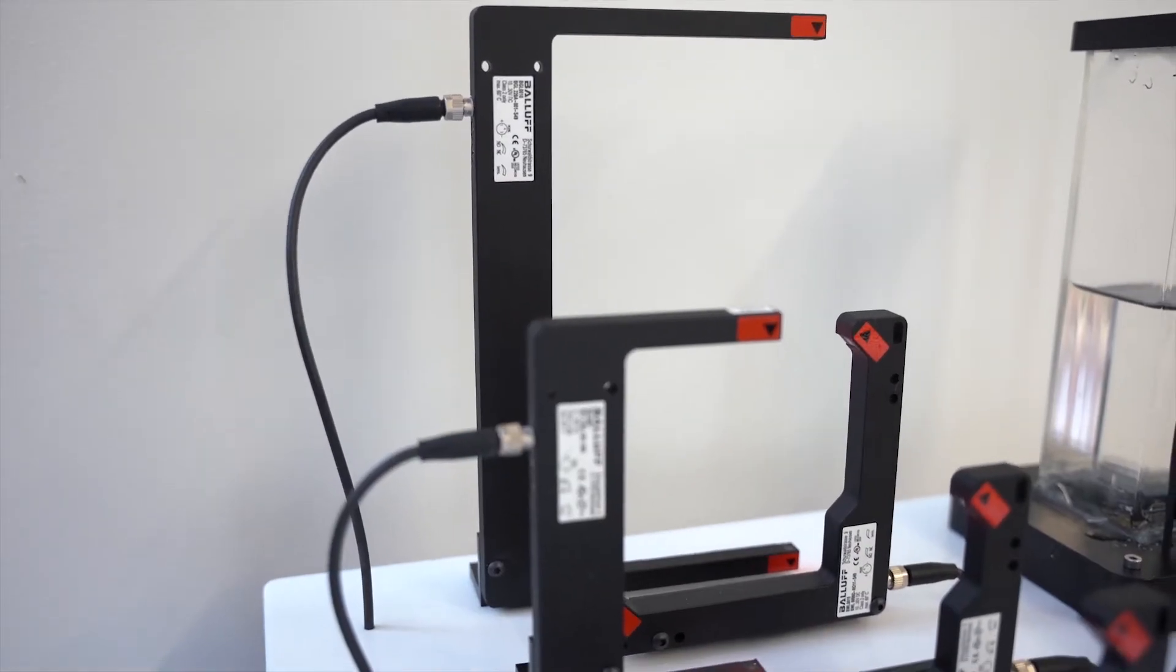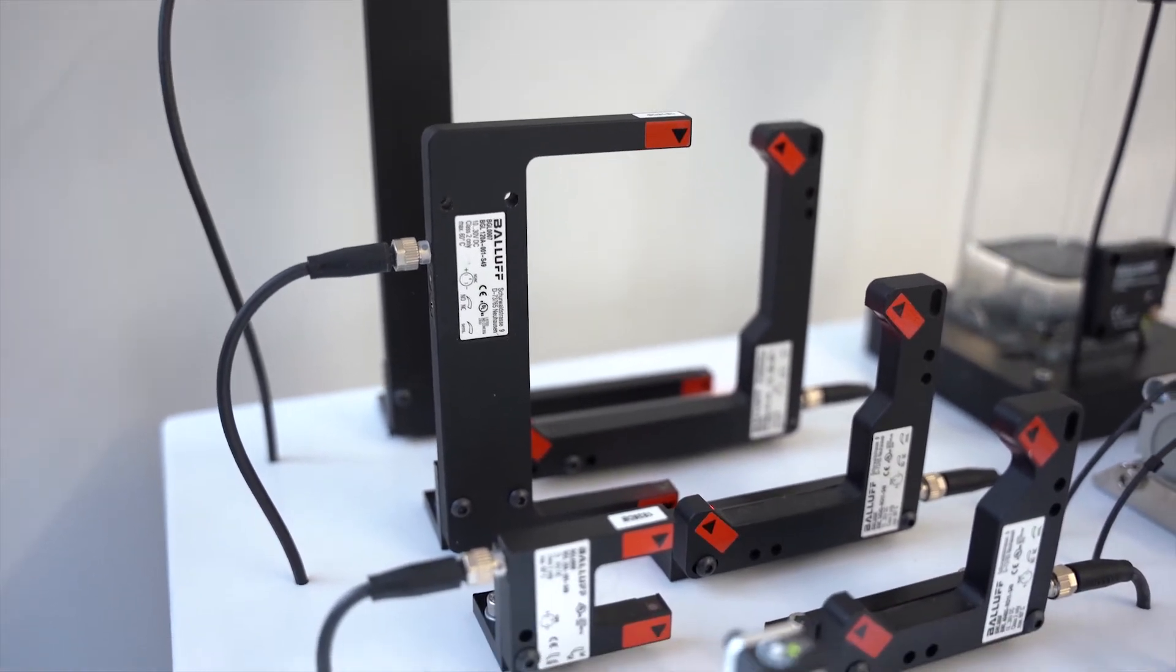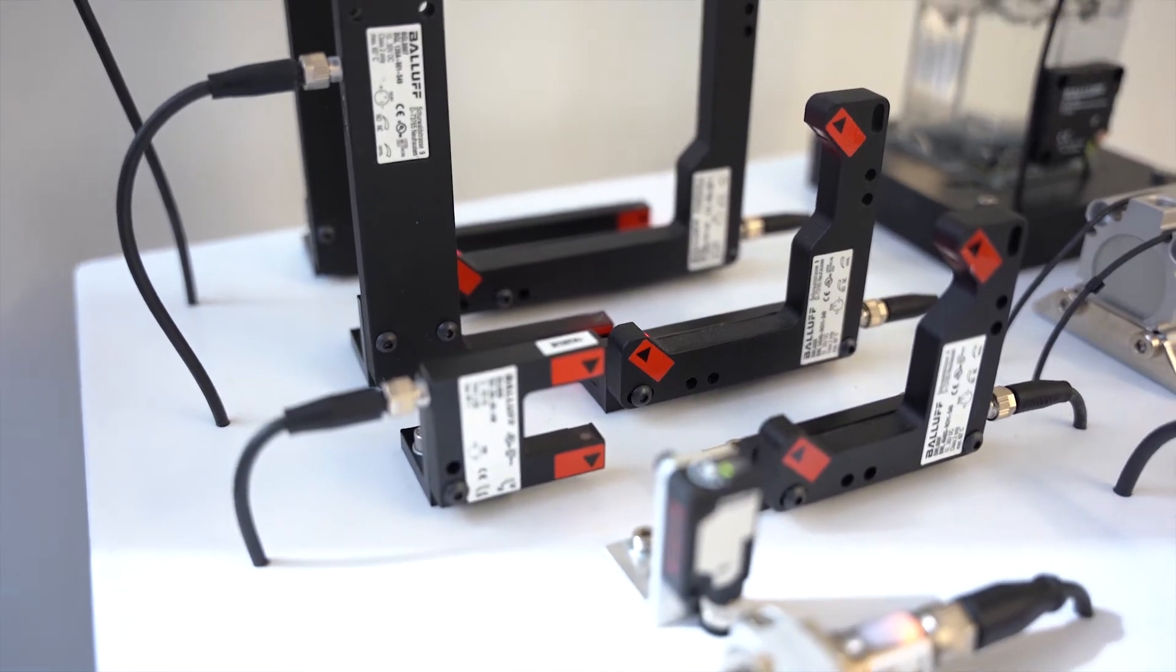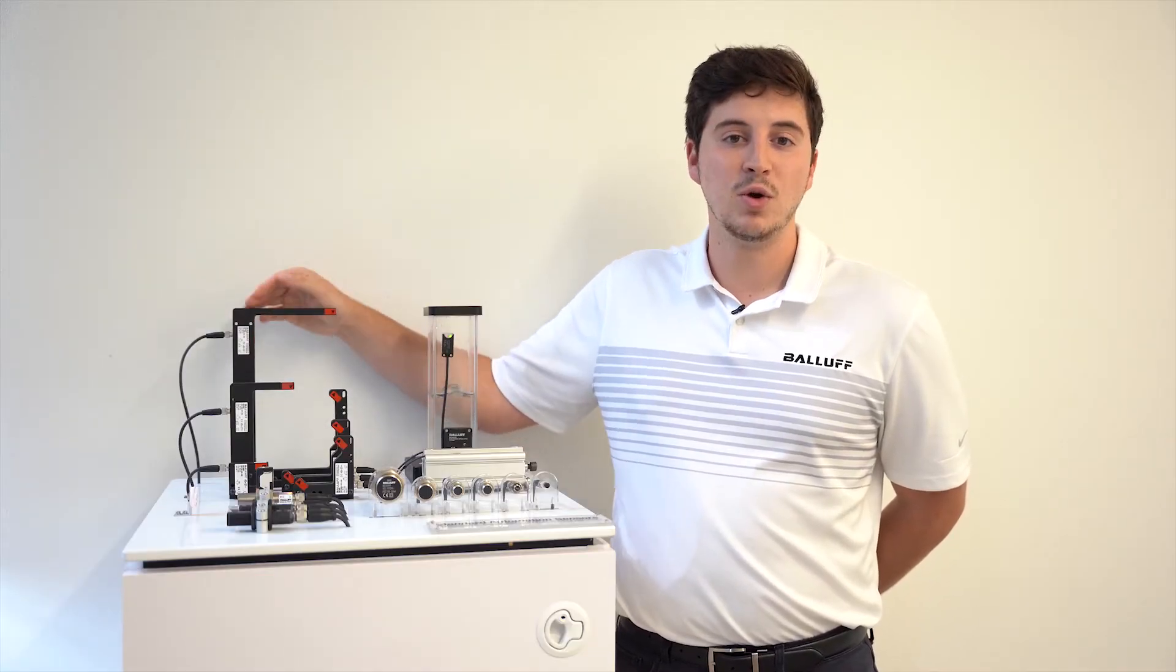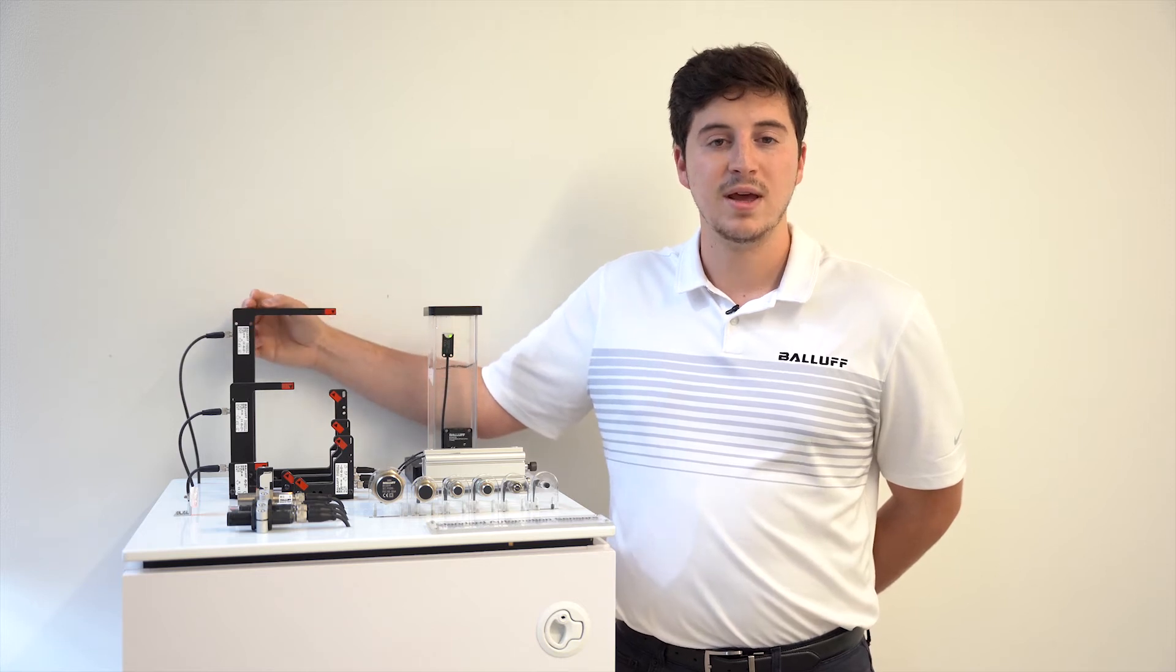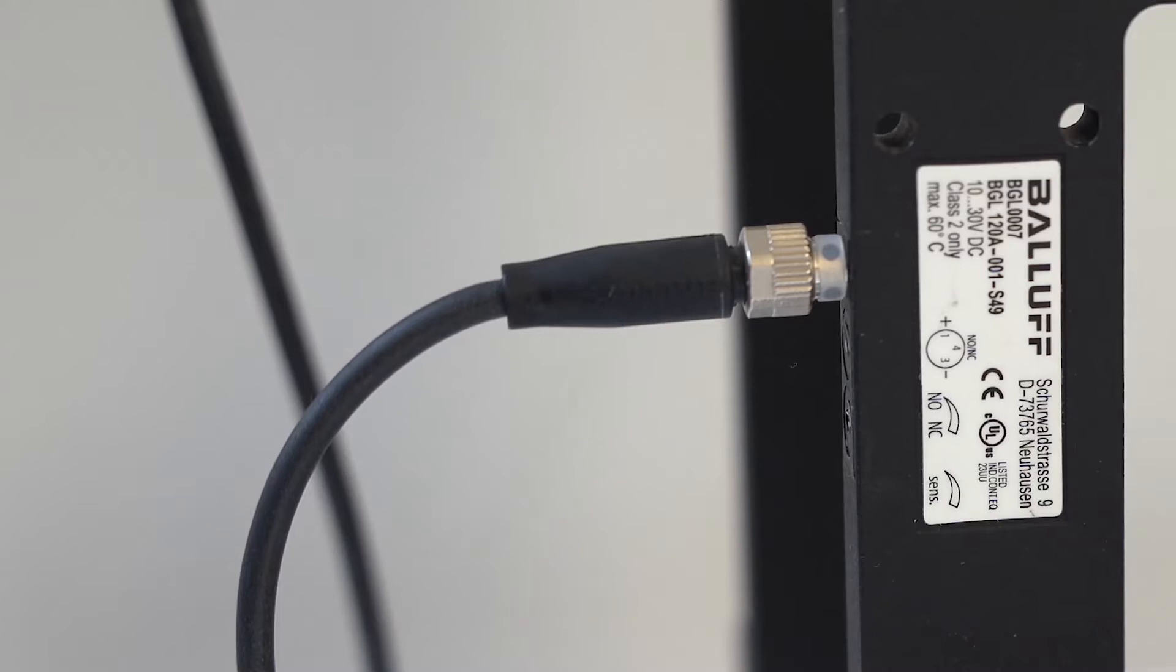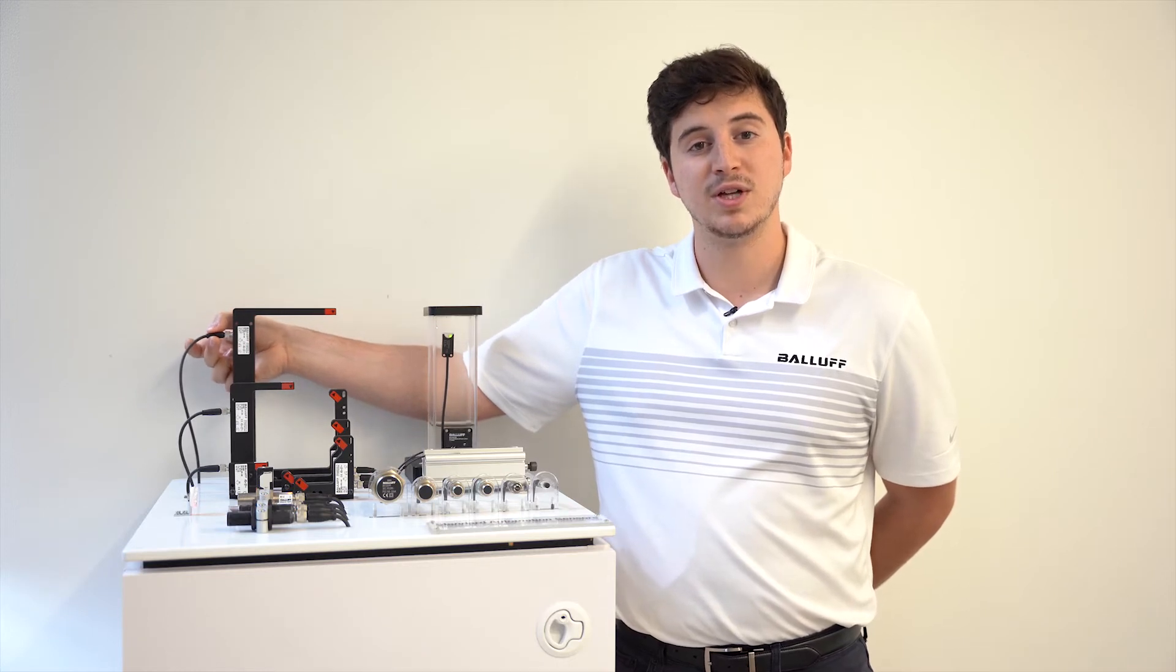To begin, let's take a look at the self-contained Ballif through beam fork sensor. These can range in widths of 5 millimeters to 220 millimeters. They are self-contained, meaning that the emitter and receiver are located in this one robust housing. This provides a few benefits, the first being it only requires one electrical connection. That can also lead to reduced customer expense by reducing the setup procedure time.